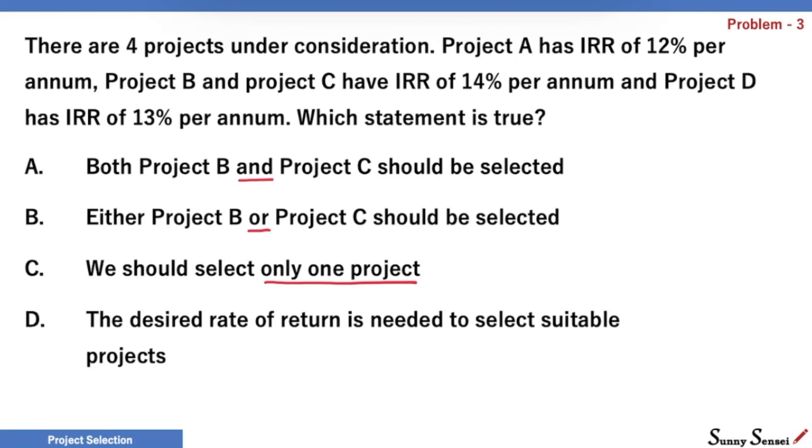Choice D: The desired rate of return is needed. Yes. We need this information to judge whether the IRR is good enough. If our target is 15%, none of these can be selected. If it is 10%, we can potentially select all these 4 projects with B and C at the top of our priority. So, our choice is D.